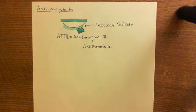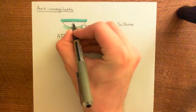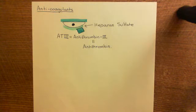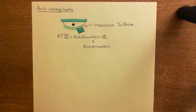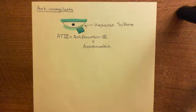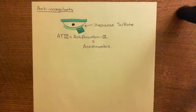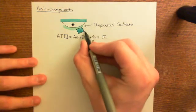Once antithrombin III is bound to the heparan sulfate on endothelial cells, it becomes active. Previously, the form released into the blood by the liver is inactive. However, once bound to the heparan sulfate on the surface of endothelial cells, it becomes active. When it's active, it inhibits a whole bunch of coagulation factors. Its name tells you one of the coagulation factors it inhibits — it inhibits thrombin.